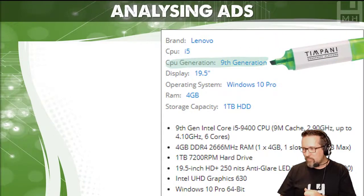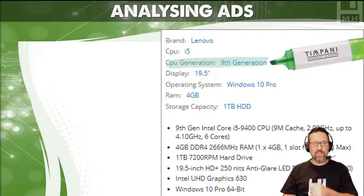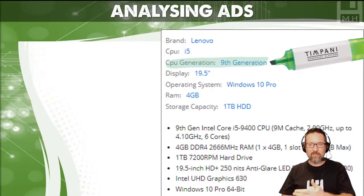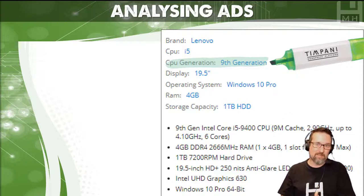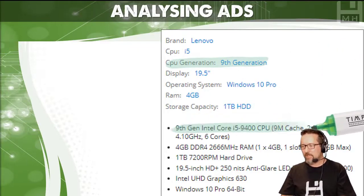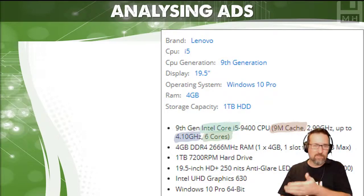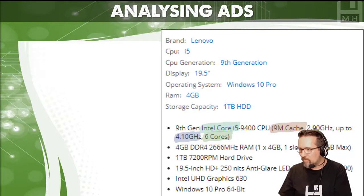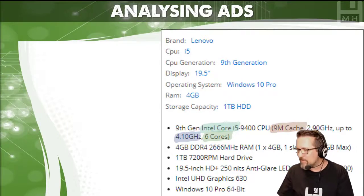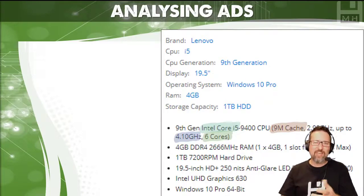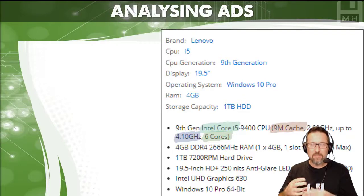This advert says CPU generation ninth generation, which is like the ninth version of the CPU — even better than previous ones. We have a ninth gen Intel Core i5 9400 — let's break that up. Ninth gen is the ninth generation, Intel Core i5 is the brand and model, 9400 is probably a model number. It also has a nine megabyte cache, which is just another storage area on the CPU so it can do things faster.